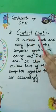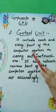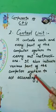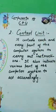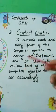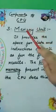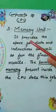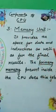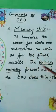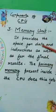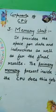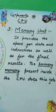The next component of CPU is the Control Unit. It controls each and every part of the computer system to carry out instructions and instructs various parts of the computer to act accordingly. The Control Unit is responsible for managing and controlling the entire operations of a computer system and makes sure that the computer produces the correct result. The next component is the Memory Unit, which provides space for data, instructions, and final results. The primary memory present inside the CPU does this job.